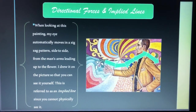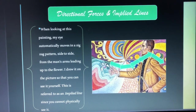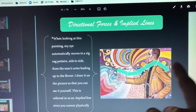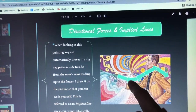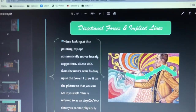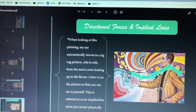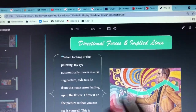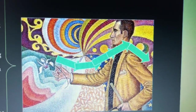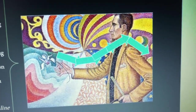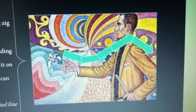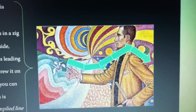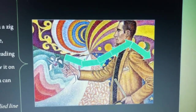I mentioned a few slides ago directional forces and implied lines — when I was talking about the zigzag pattern, I was mentioning this right here. I drew it on the painting so you can see it yourself. It kind of moves side to side, and as you can see it goes from the flower up the arm and then the other person's arm. I thought this is interesting because it almost seems as if Paul Signac wanted you to focus on how the body is moving and how he is handing the flower out. Implied lines like this are ones that you cannot physically see — you would have to draw this out or mention it for someone else to see it too. Mostly all artworks have this within them.